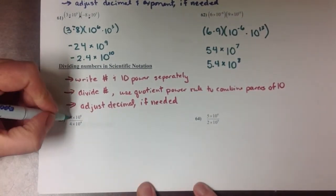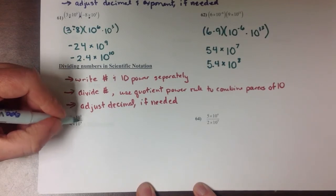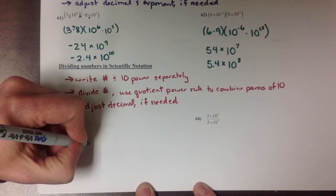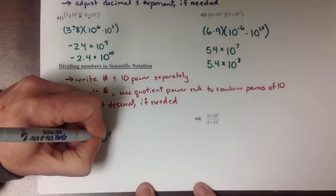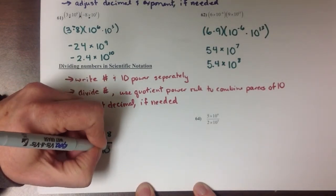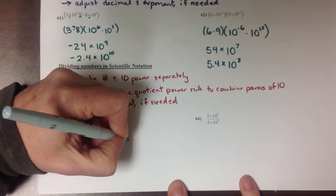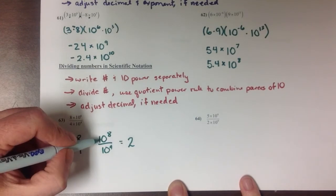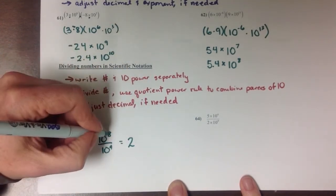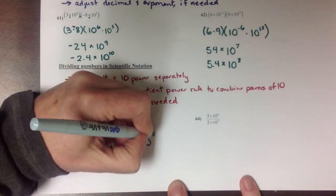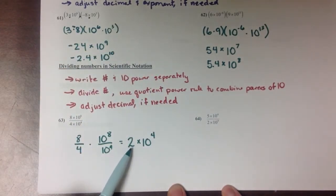So let's look at a couple examples here. Problem 63. We have 8 times 10 to the 8th over 4 times 10 to the 4th. So I'm going to rewrite that as 8 over 4 times 10 to the 8th over 10 to the 4th. 8 divided by 4 gives me 2, and 10 to the 8th over 10 to the 4th, 8 minus 4 is 4, gives me 10 to the 4th. And since 2 is a number between 1 and 9, I don't need to change this, I don't need to do that last step of adjusting the decimal.